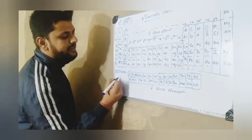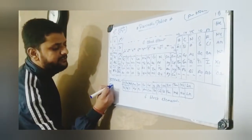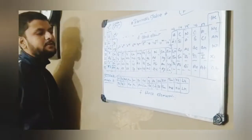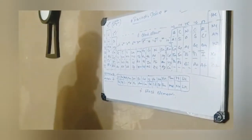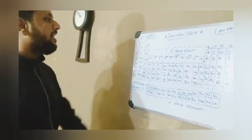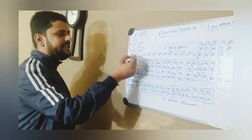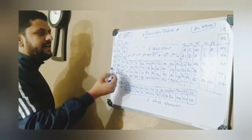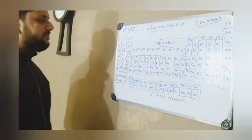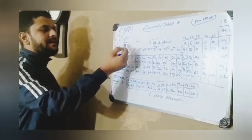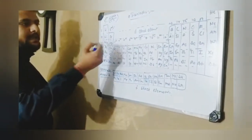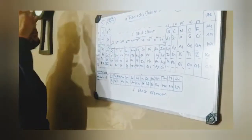The definition of group will be vertical column and the definition of period will be horizontal column. Seven periods and 18 groups. Now moving on, first and second group elements are S-block elements.